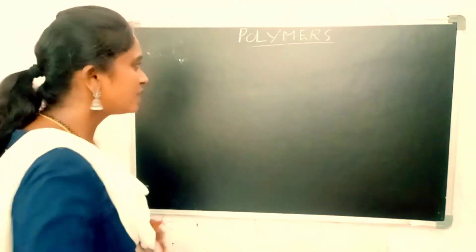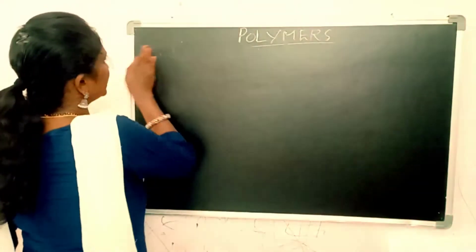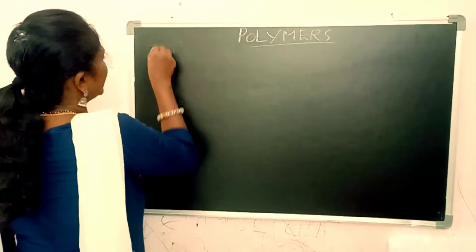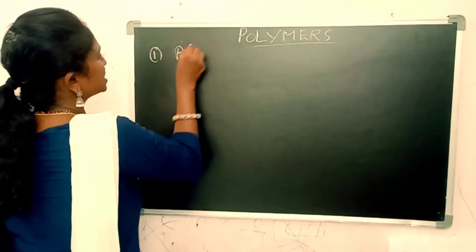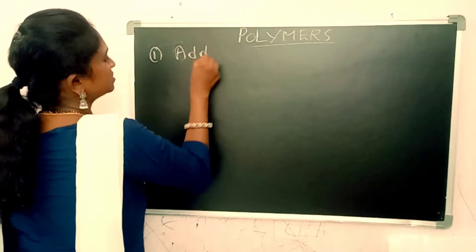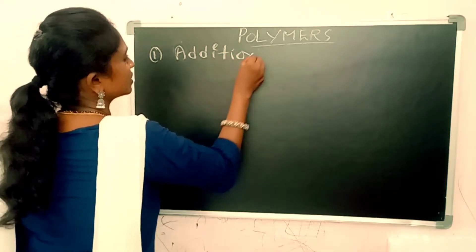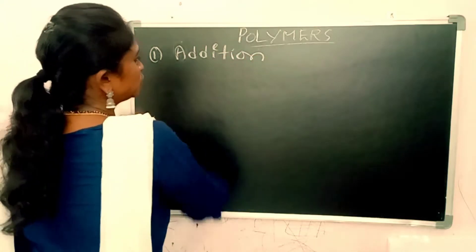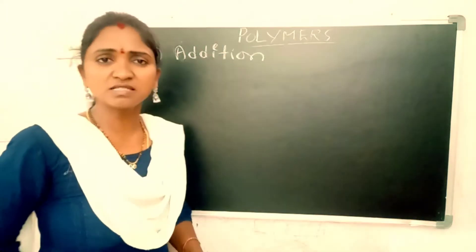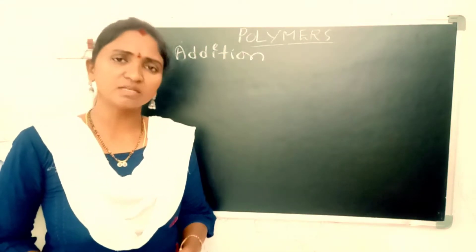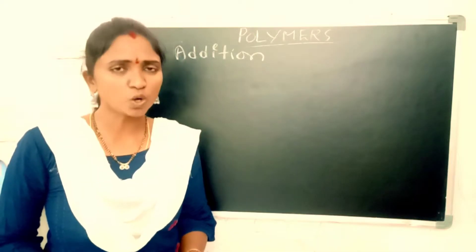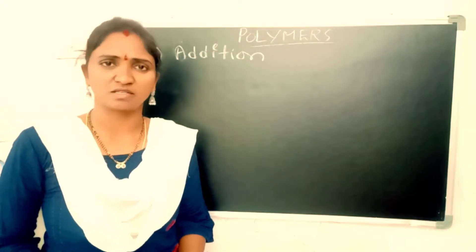They are, namely: number 1 — addition polymerization; number 2 — condensation polymerization; and number 3 — copolymerization.